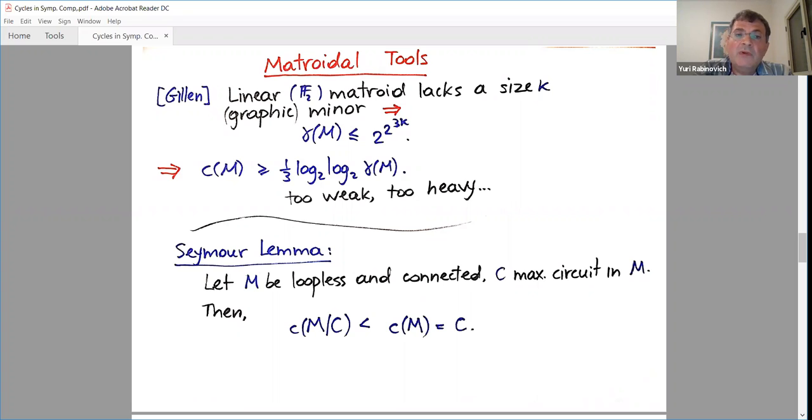There are minors in matroids and people did study them. There's a very heavy theorem of Geelen-Gerards-Whittle that if you take a linear matroid - and as was mentioned on the previous page, the simplicial matroid is linear - if the linear matroid lacks a size k minor, a special minor, but okay, in our case it's okay, then we know that the density cannot be too much. It's double exponential. And one can conclude using this theorem that C(M) is at least log log the density. So the problem is, actually, if we work over F2, then it gives something okay, something weak. And we used too heavy a hammer.